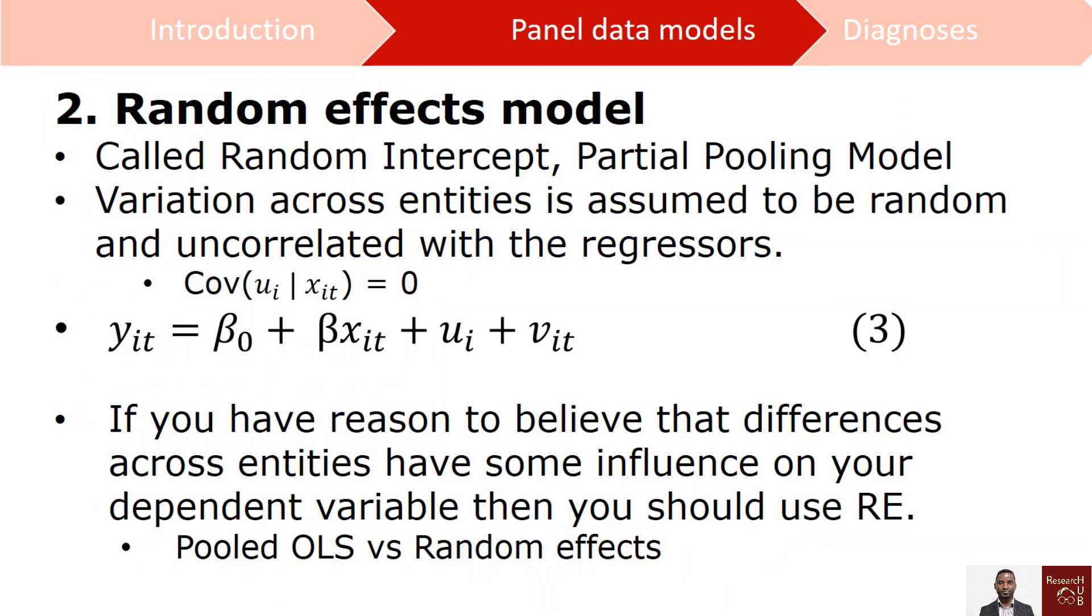Random effects is also called the random intercept or partial pooling model and the main assumption is that there is no correlation between the ui that we have been concerned with and the explanatory variables, so the correlation is zero. If you run the Lagrange multiplier test and you see that panel data is appropriate, you may want to go with random effects if you believe that there is a variation between the individual unit but the effects, the ui fixed effects, is not correlated with the xti.